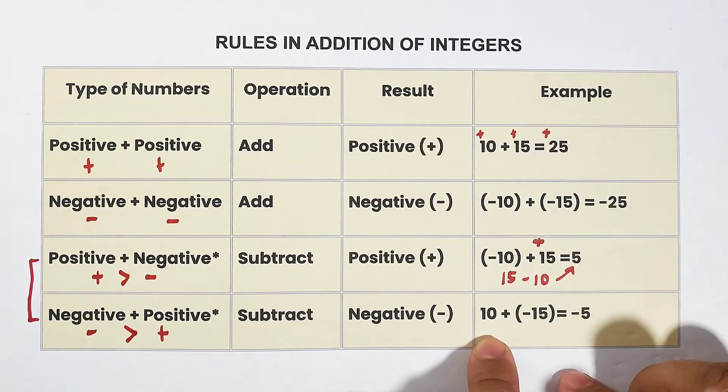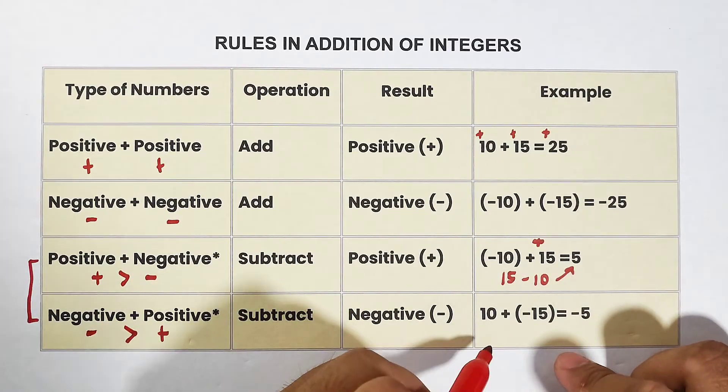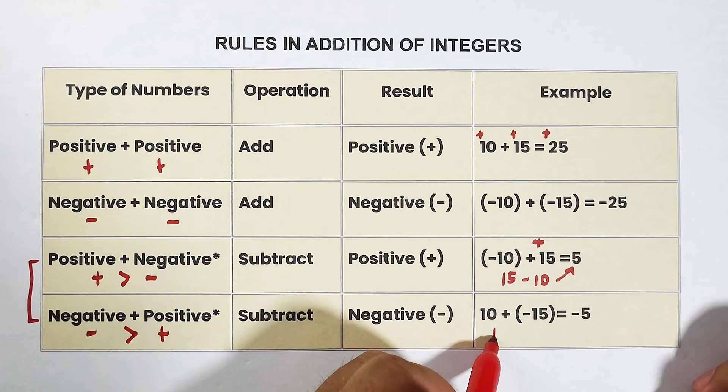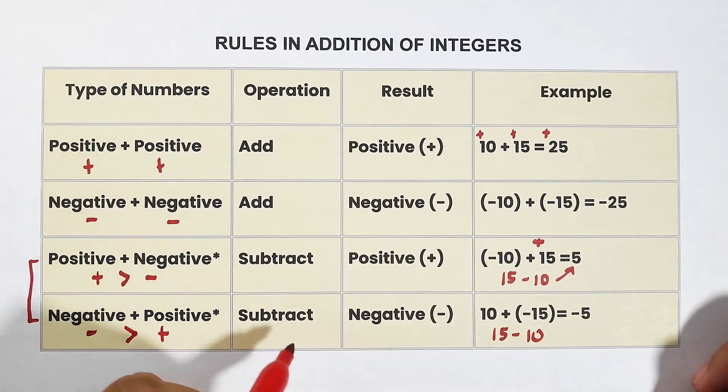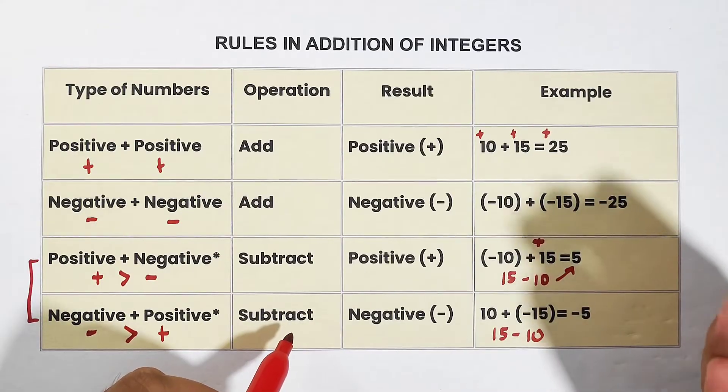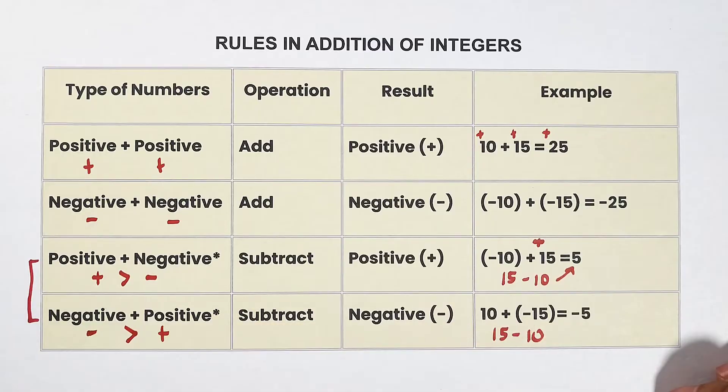For example, this is also a good one. Let's compare these two. 10 plus negative 15. So since they have different signs, subtract. So in your mind, make it 15 minus 10.